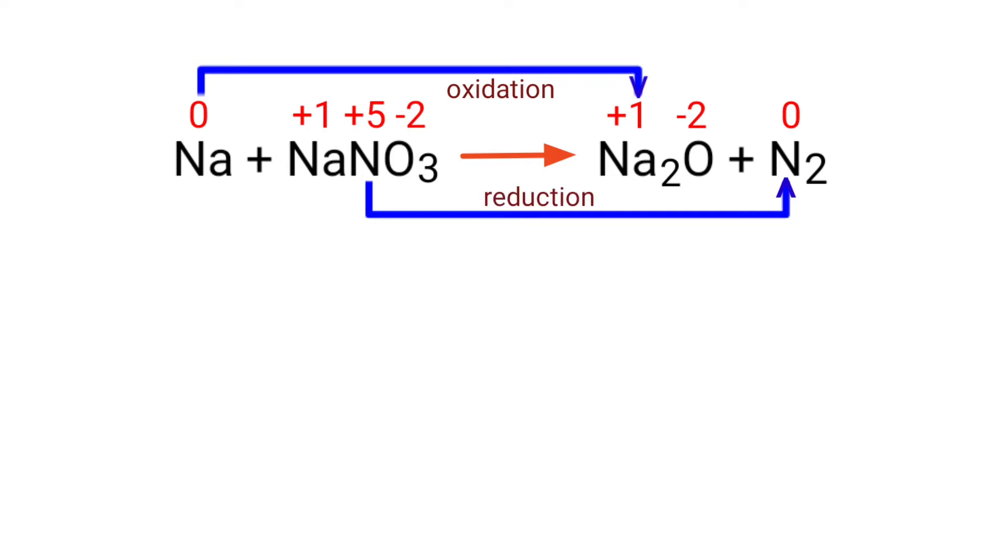In the oxidation state, the oxidation number increased by plus 1. In the reduction state, the oxidation number decreased by minus 5. Now you can make the increased oxidation number equivalent to the decreased oxidation number. To do this, you can multiply the increased oxidation number by a coefficient of 5.